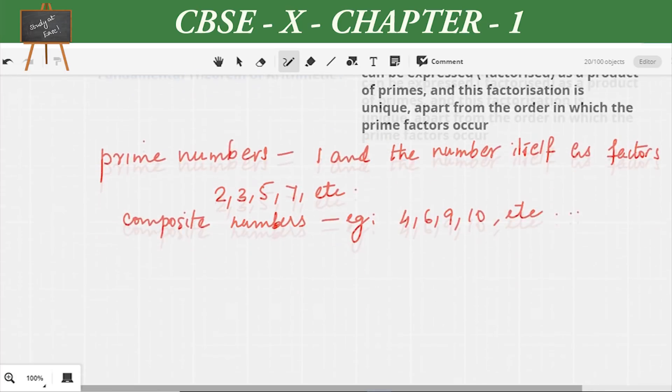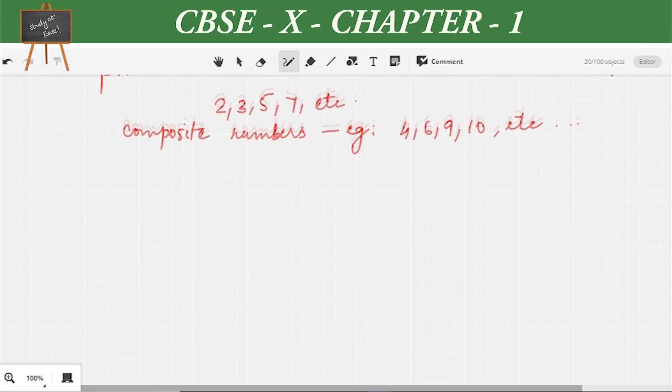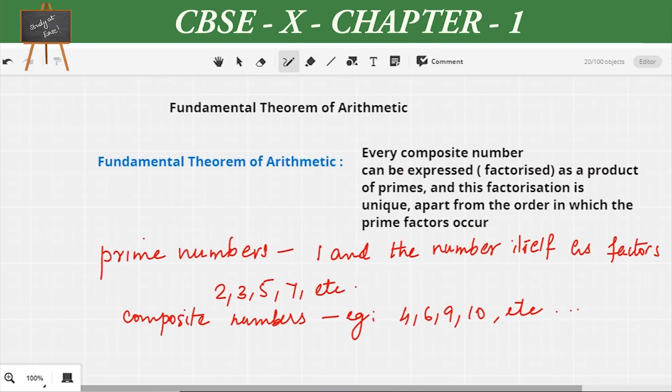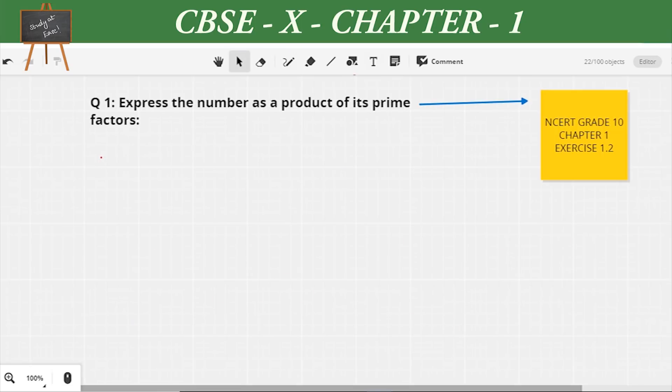Let's move on to the questions. The first question: express the number as a product of its prime factors. This question is from NCERT Grade 10 Chapter 1 Exercise 1.2. The first question is 140. I'm going to follow the tree method.